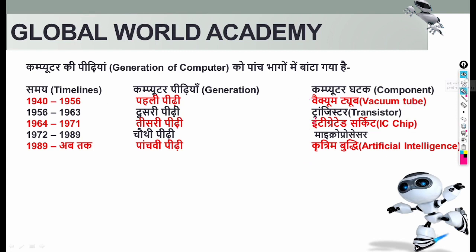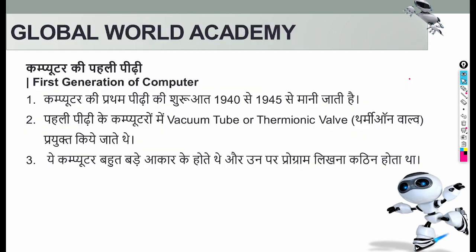You can also be asked for examples of first-generation computers, or about drawbacks and limitations. In a paper, you can expect one to two questions from this chapter — some asking for full forms, some static facts. We will cover all of these things.